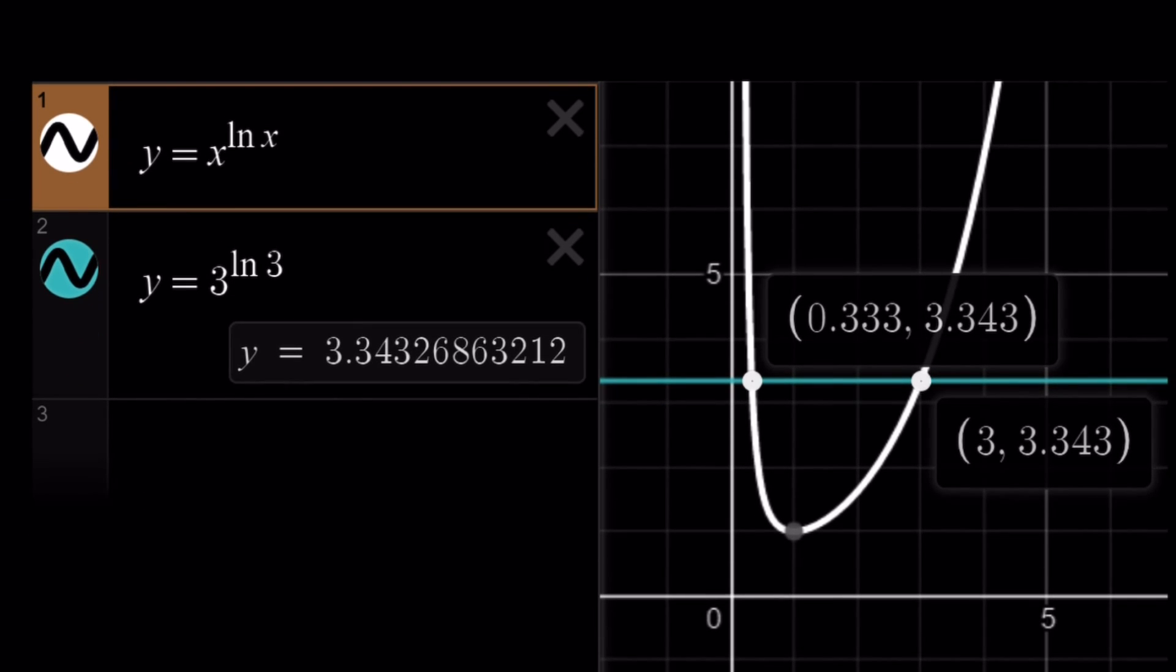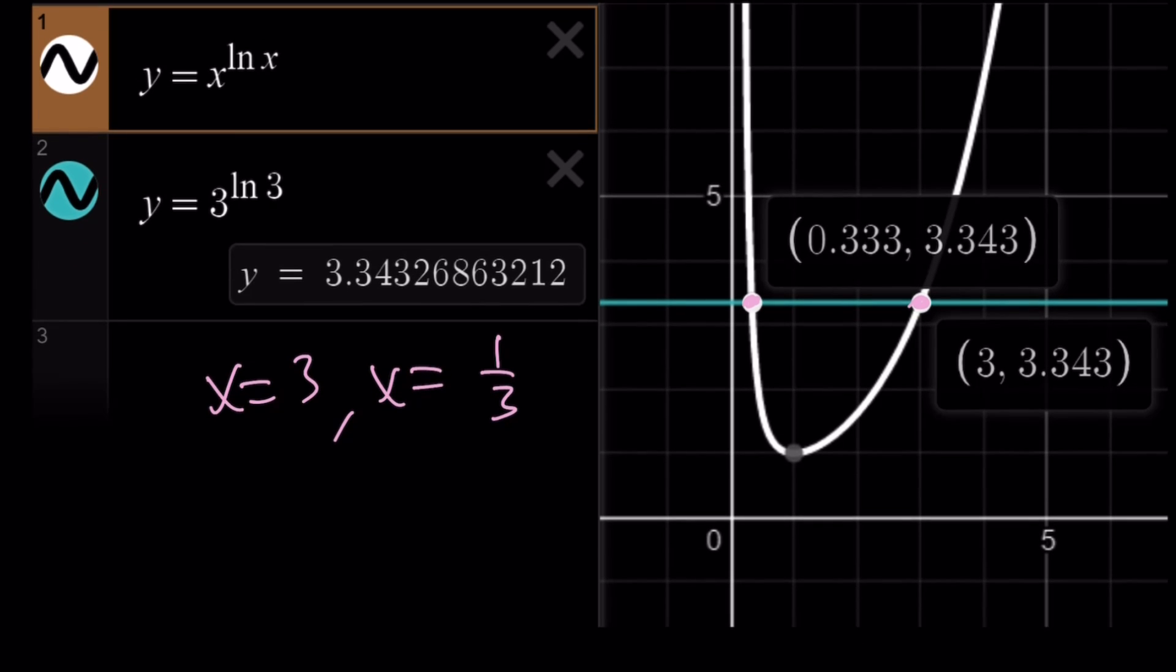Here's our graph of y equals x to the power of ln x. And then I kind of compare it to the horizontal line. And as you can see here, there are two intersection points. It's kind of like a curve like polynomials. But it's not polynomial or quartic or quadratic. But it curves like that. So, you're only going to have two solutions. So, x equals 3 and x equals 1 third are the only solutions we are getting from here.